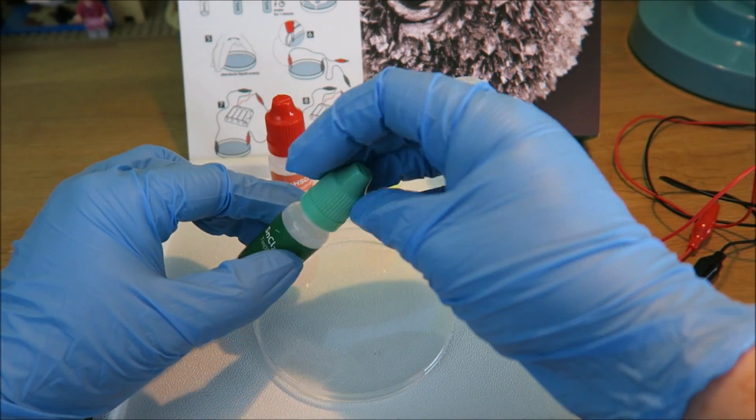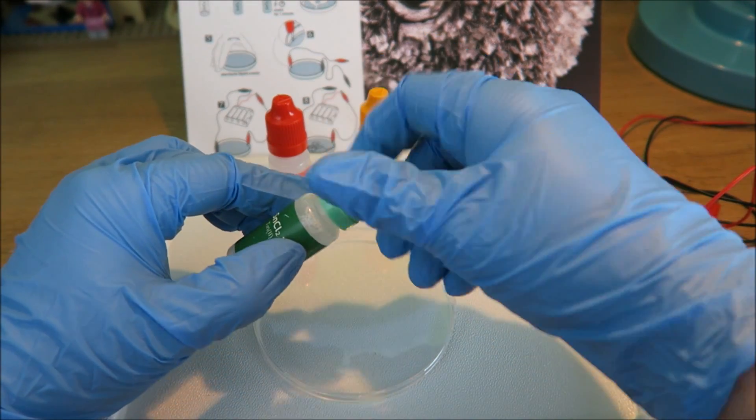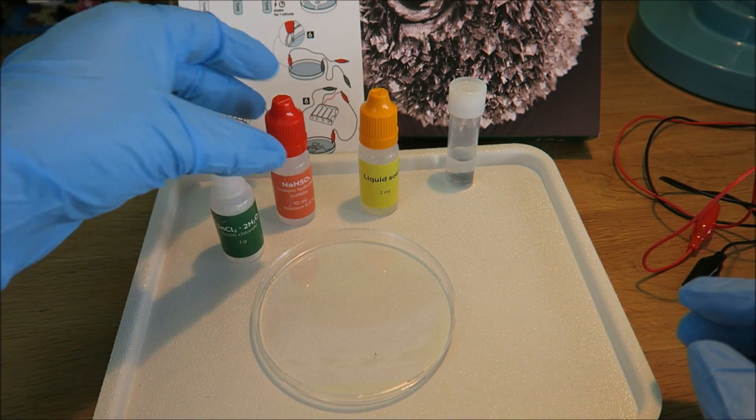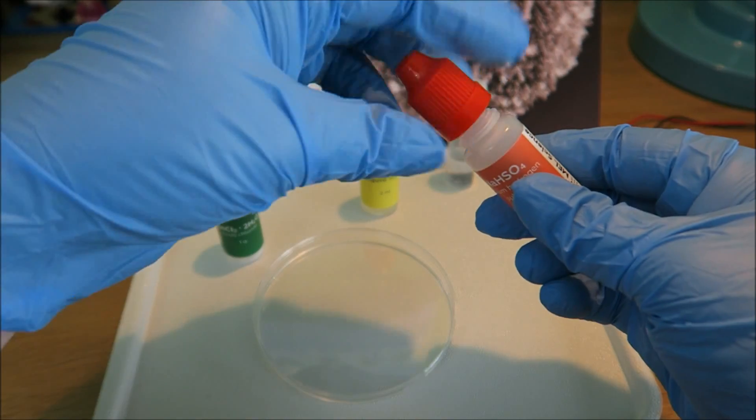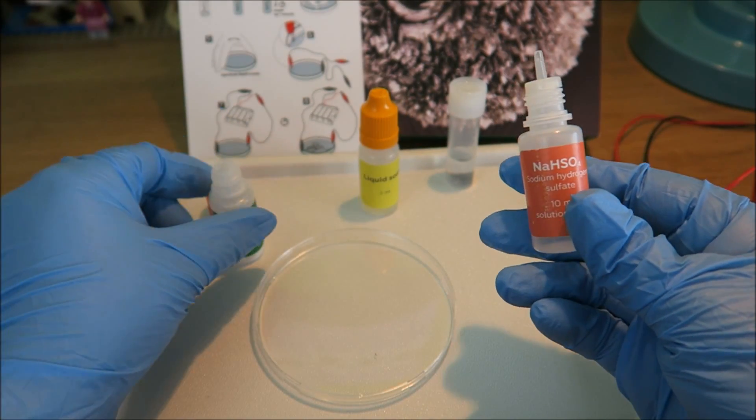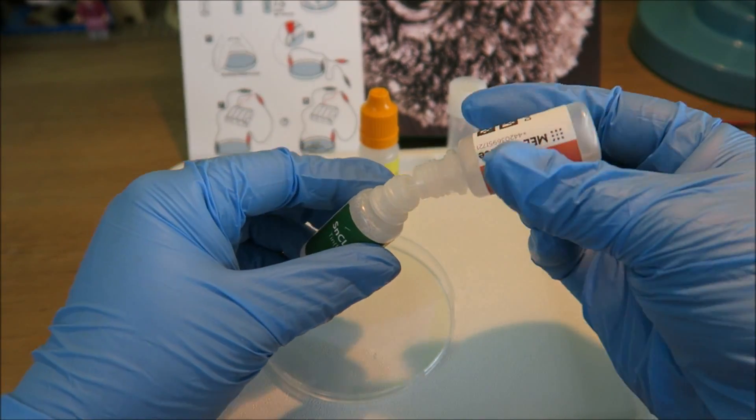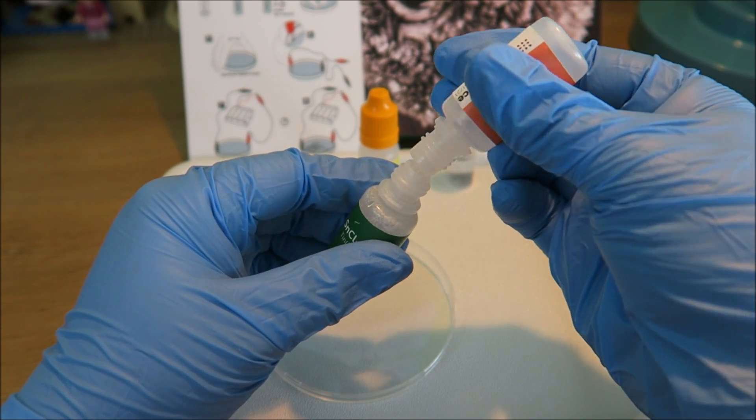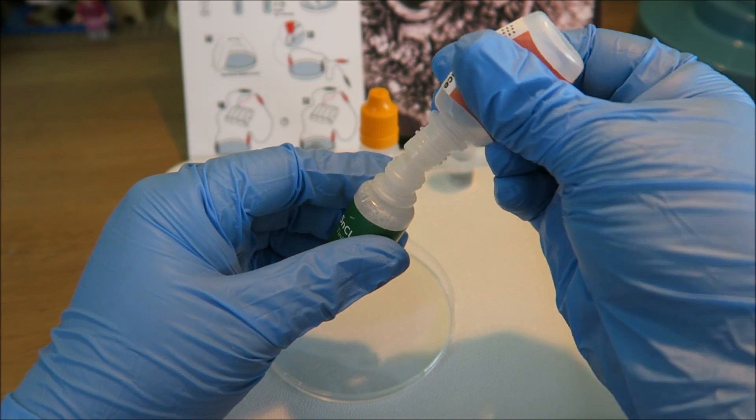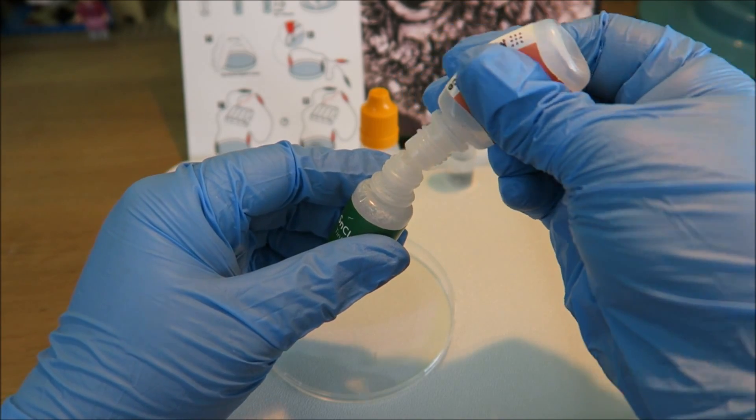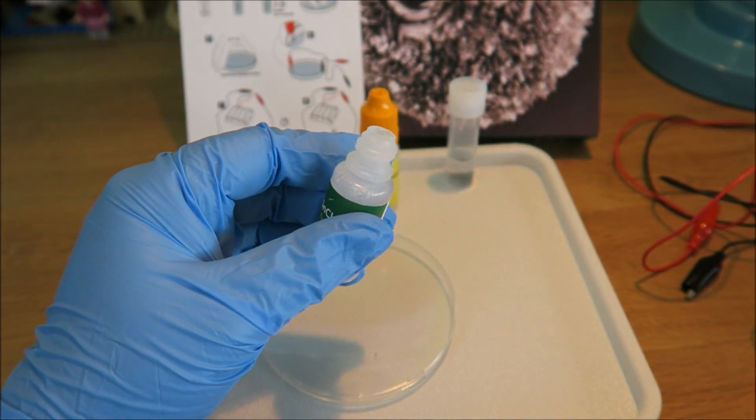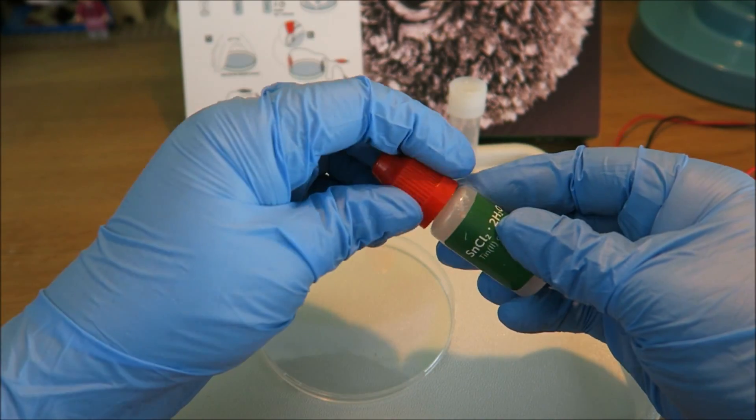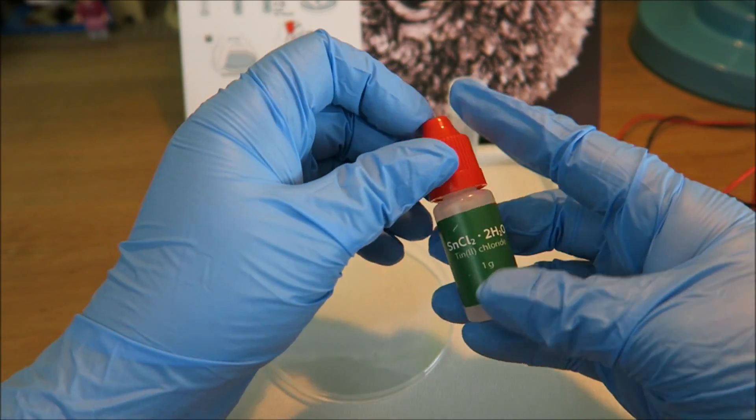The lid comes off the tin chloride and then we can throw away the blue cap because we don't need that anymore. The lid comes off the sodium hydrogen sulphate. All of that goes in there. We don't need that bottle anymore and we need to put the red lid on the green bottle and shake.